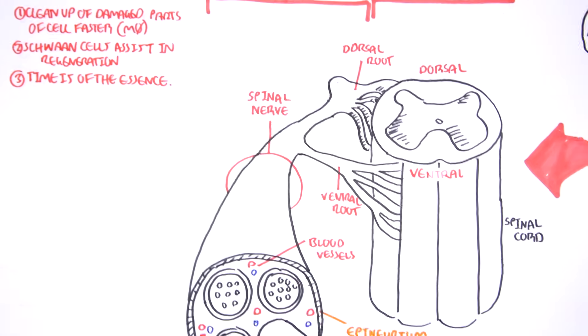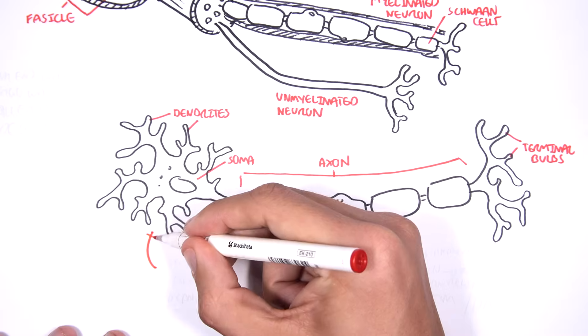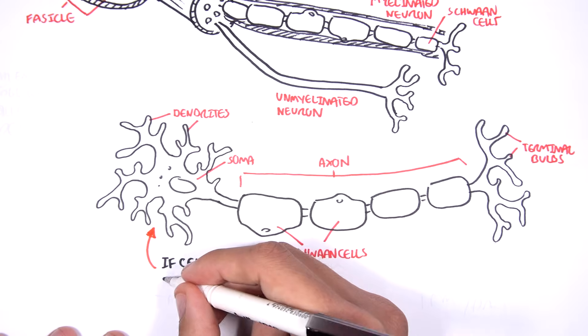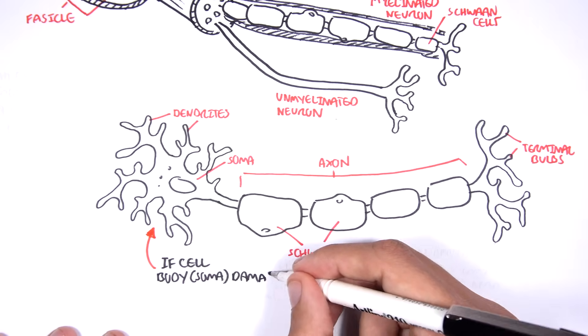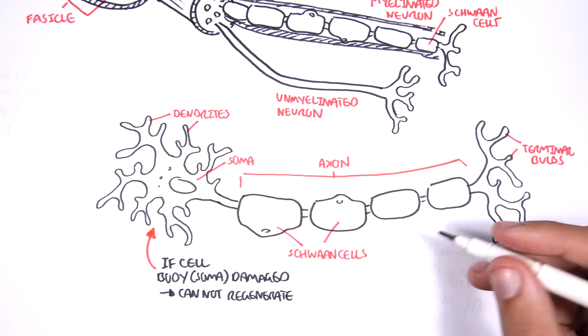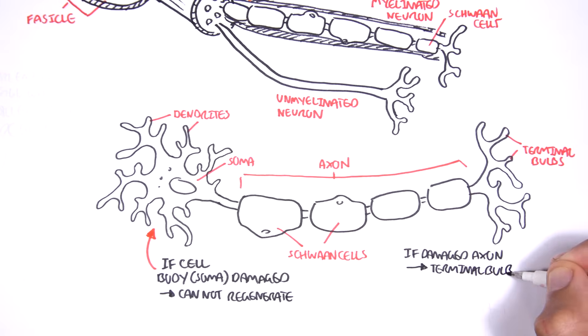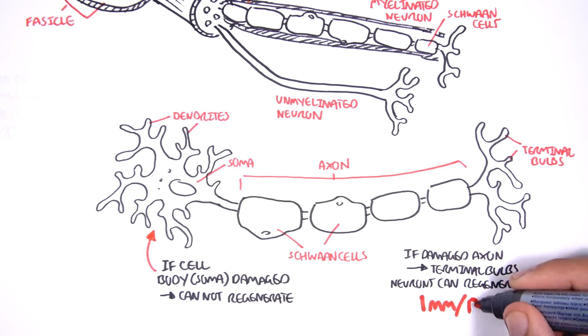Another fundamental thing to understand is that if the cell's body, the soma, is damaged, the cell, the neuron, cannot regenerate. However, if the axon is damaged, or the terminal, well, neurons can then regenerate. It will just grow the axon back, as well as the terminal. And the growth, the speed of the growth is about 1 mm per day.